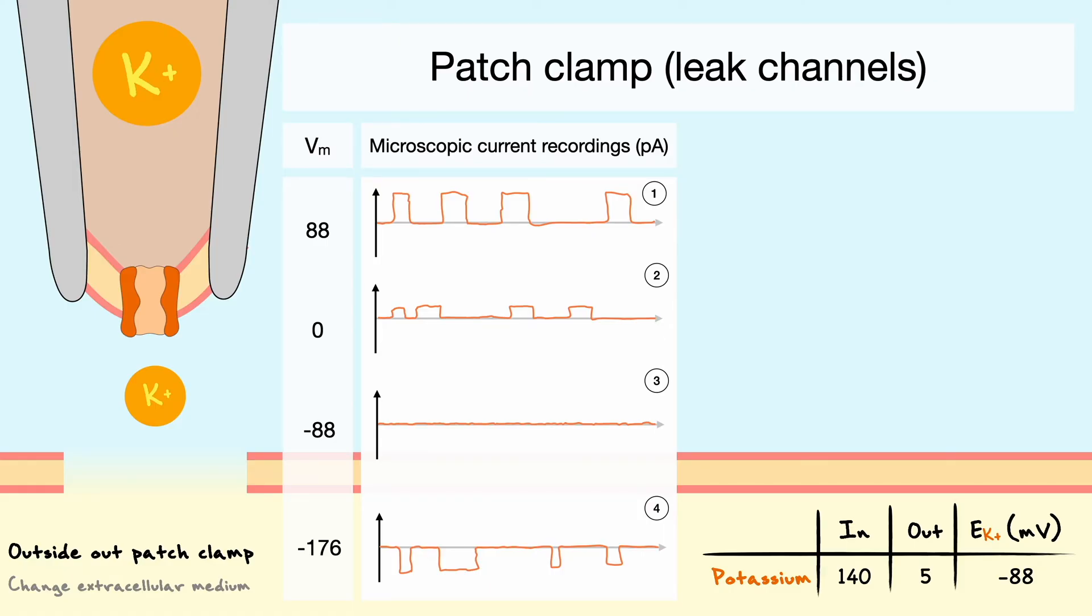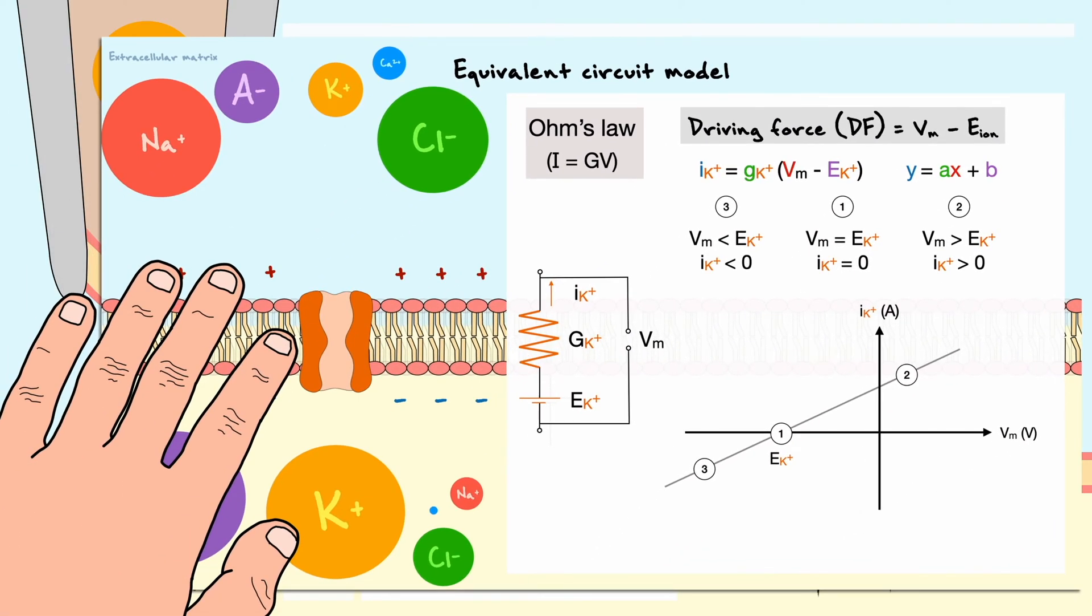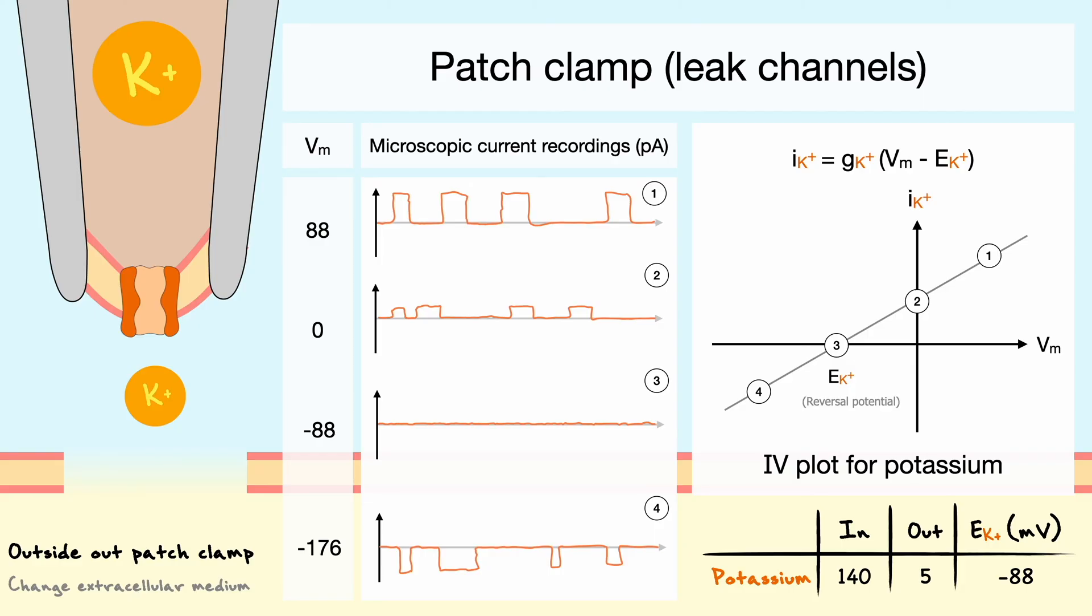Now to understand the direction and the magnitude of the currents, we need to go back to a relation we have previously established. Remember that leak channels are simple resistors and the current flowing to them is equal to a constant conductance times the driving force. As such, the results here directly showcase this relation. For example, in the third trial, the membrane potential is clamped at the equilibrium potential and thus there is no net flux of potassium.